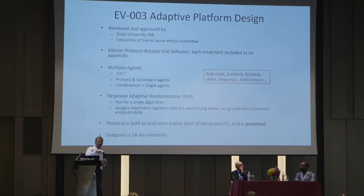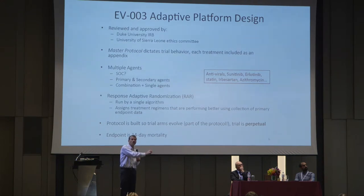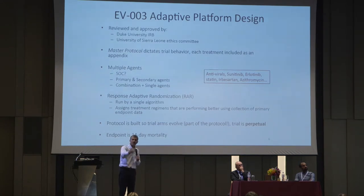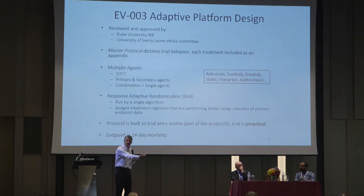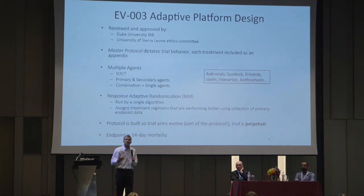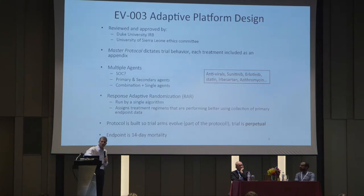The master protocol dictates what happens. This trial did a couple things: it was going to response-adaptive randomize to the agents — if one agent was working better than another, we would put more patients on that right away. We did interims weekly to update randomizations. We would favor arms doing better, but we also immediately combined two agents together. Rather than wait 12 years to combine drugs, we combined them right away. The endpoint in the trial was 14-day mortality — this was the treatment of subjects with Ebola.